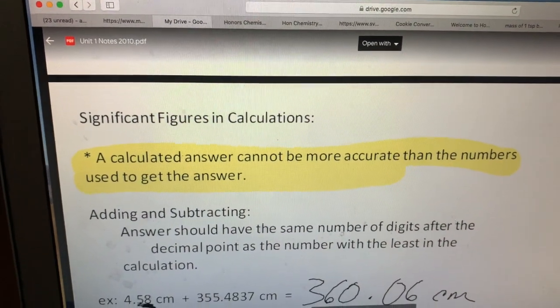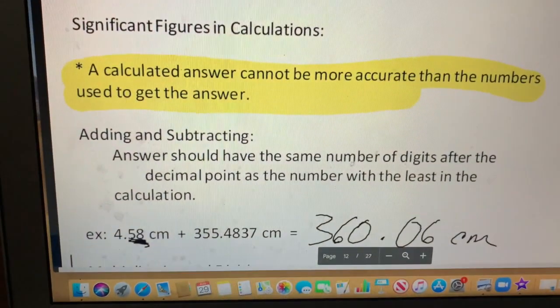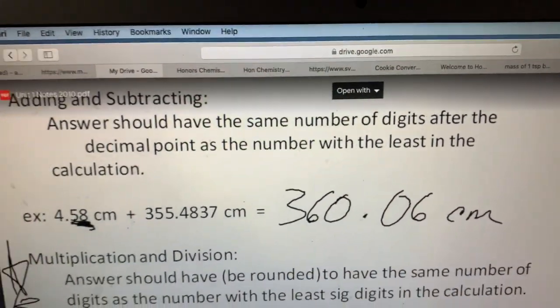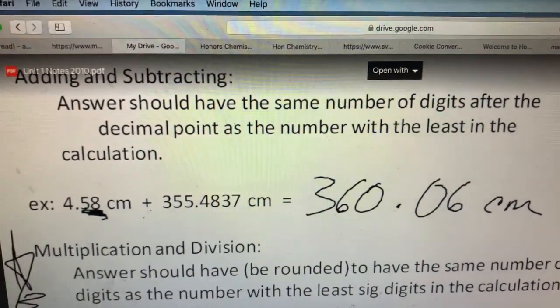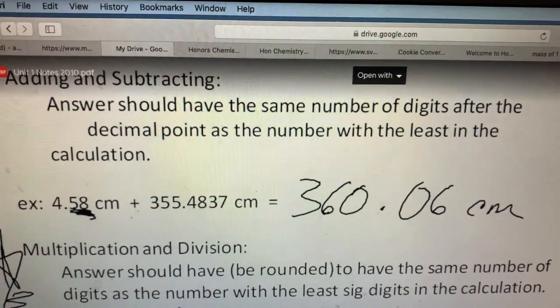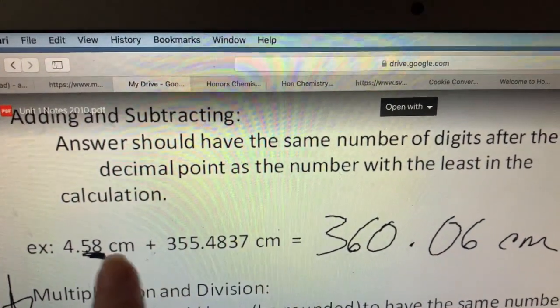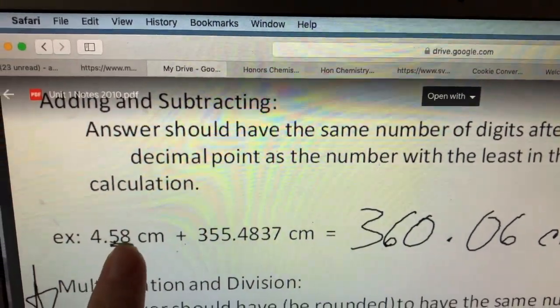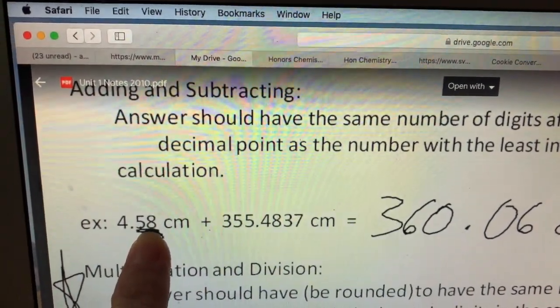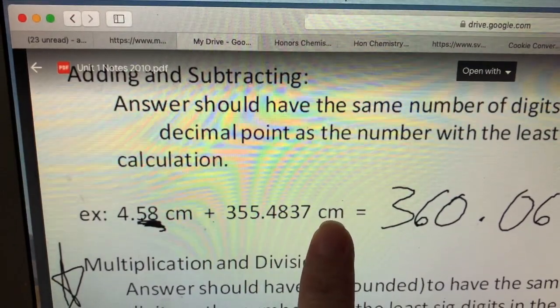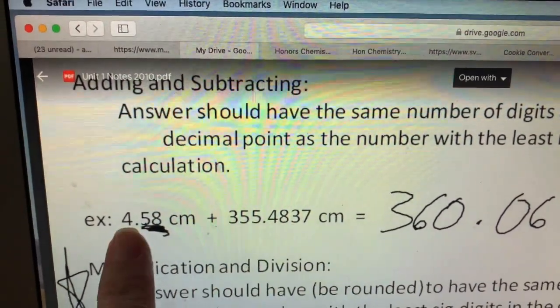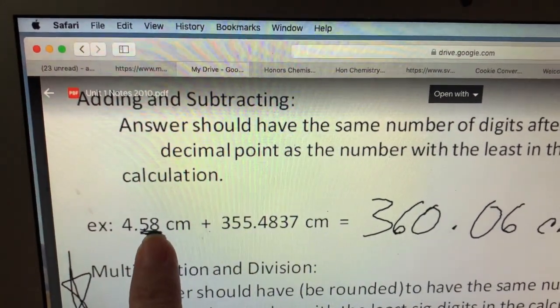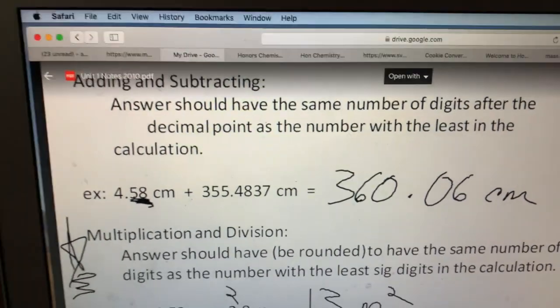The first is for adding and subtracting, and I will be honest with you, this is going to be the one you're going to use the least. Answers should have the same number of digits after the decimal point as the number with the least in the calculation. So remember when adding things have to have the same label. So we're dealing with the exact same type of tool. This one only went out to the hundredths place while this instrument went much farther out. So we're going to have to add them, and you just put them in your calculator and you're going to round your number so it just has two after the decimal place right there.